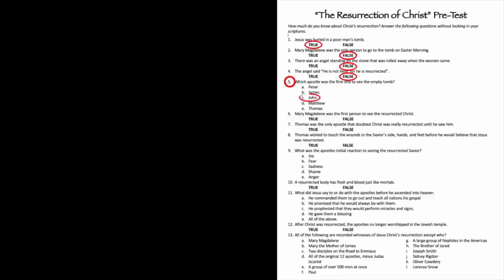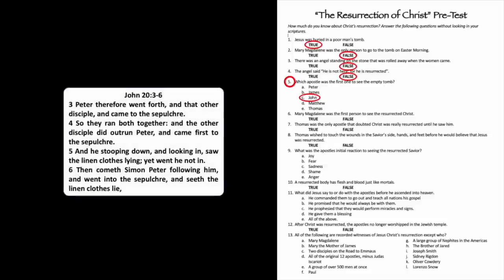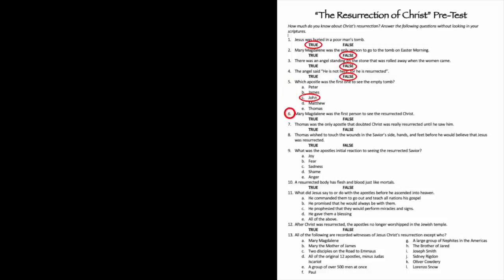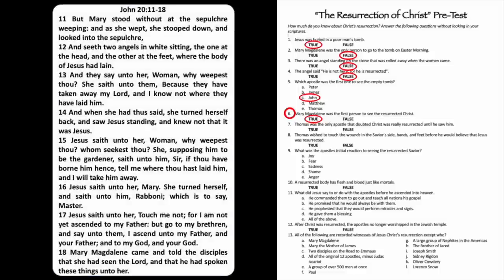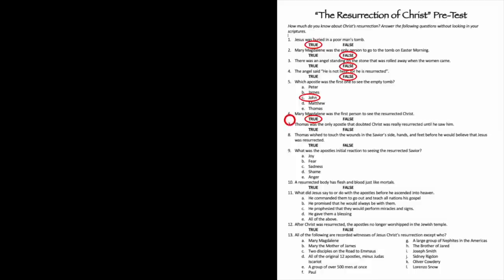Number five: Which apostle was the first to see the empty tomb? The answer is John. You can read about that in John 20:3–6. When the women inform them of the empty tomb, both Peter and John come running, but John very humbly tells us he got there first. Then, probably out of respect for Peter's authority, he waits and allows Peter to go into the tomb first. Number six: Mary Magdalene was the first person to see the resurrected Christ — that is true, from John 20:11–18.